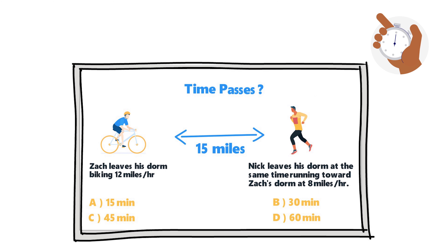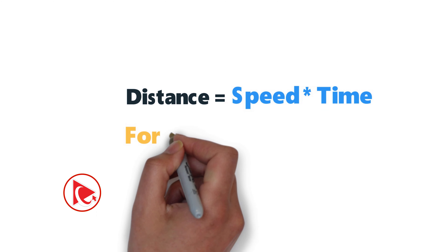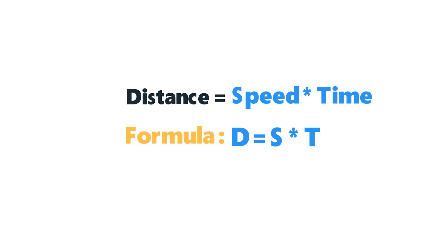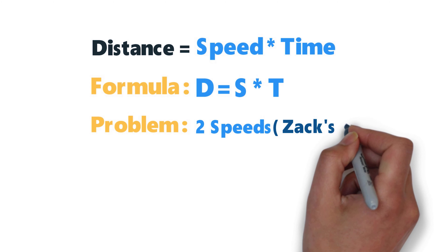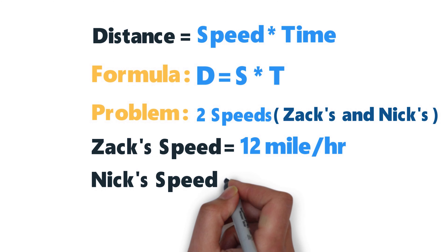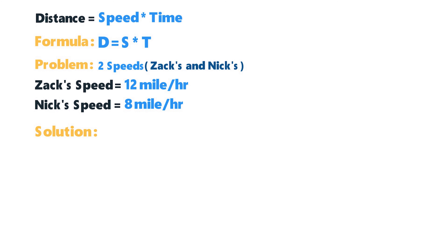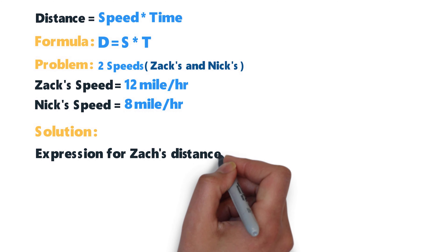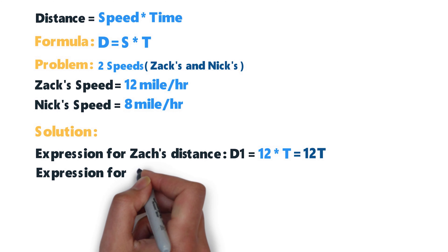Pause this video to see if you can come up with the answer on your own. Ready or not, we're moving forward. As you may know, distance is calculated as speed multiplied by time: d = s × t. This problem is a little trickier because we have two speeds. Zack is moving at 12 miles per hour and Nick at 8 miles per hour, so we need to build two expressions. Zack's distance: d1 = 12t; Nick's distance: d2 = 8t.